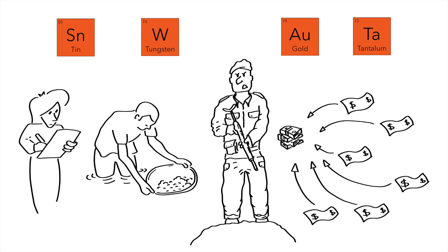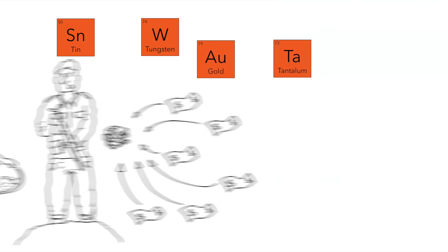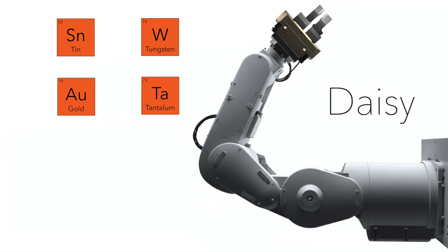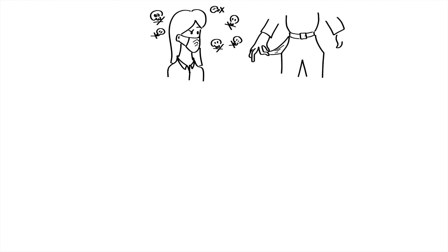American companies now have to report the source of their conflict minerals. This is probably why Daisy, Apple's disassembling robot for the iPhone, was designed to collect and recycle those four elements, among others.